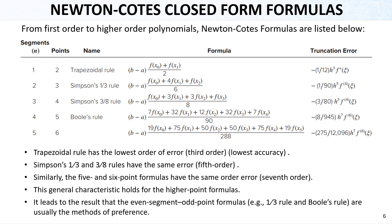Now let's look at the closed-form Newton-Cotes formulas. They follow the same idea of using different numbers of segments, ranging from first-order to higher-order polynomials. For one segment we have two points — f(x₀) and f(x₁) — and the formula divides by two. This is called the trapezoidal rule, very similar to the two-segment open-form case. We will give the details of this rule in the following slides.